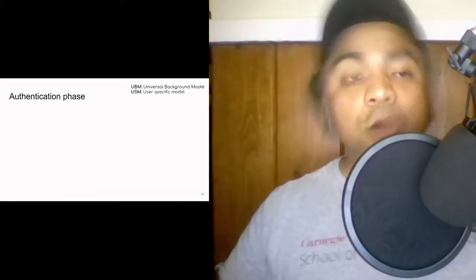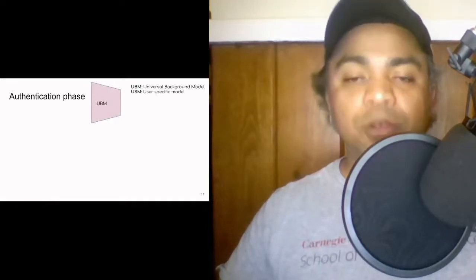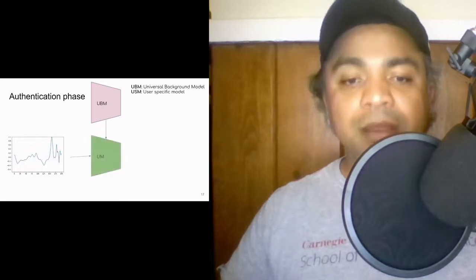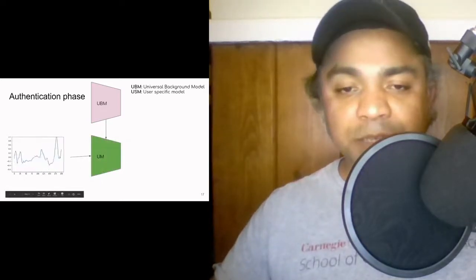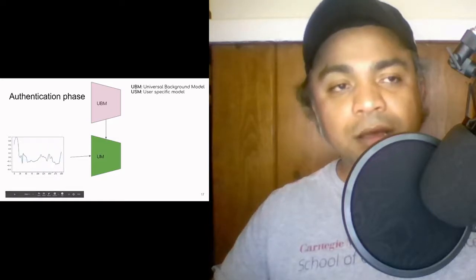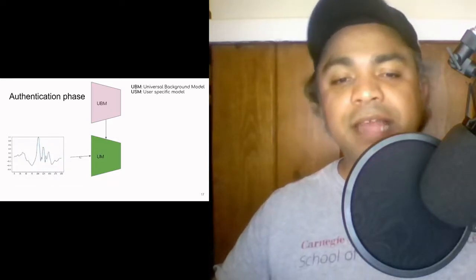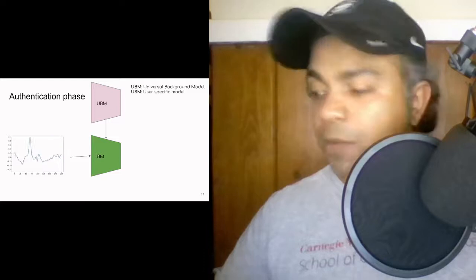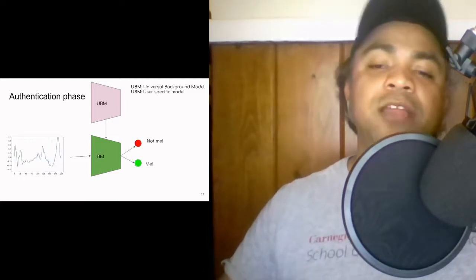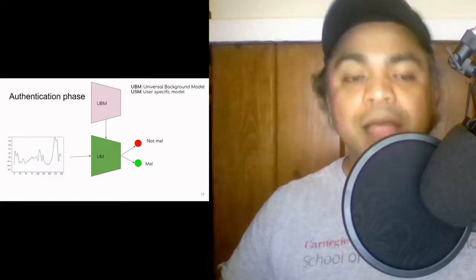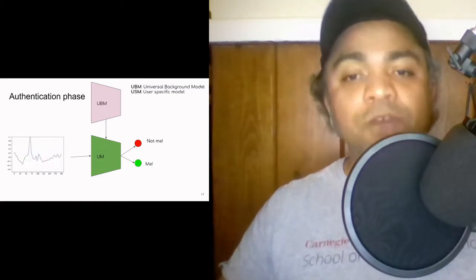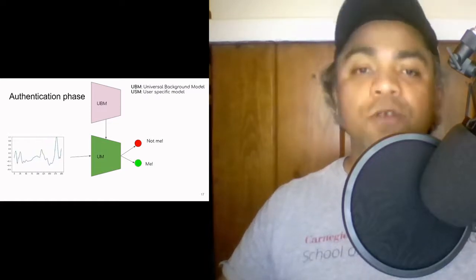In the authentication phase, you have the universal background model that is adapted to form the user specific model. So when a person walks during the authentication phase, their gait cycles are fed into the user specific model. And then you have two output nodes pertaining to me or not me. And this is what differentiates authentication built using sound federated learning principles over surveillance.